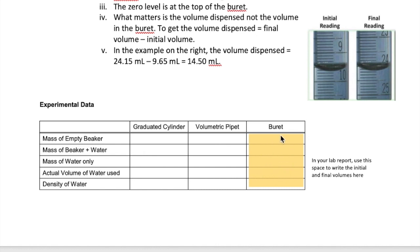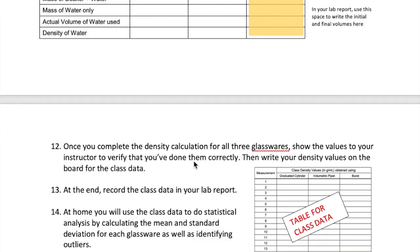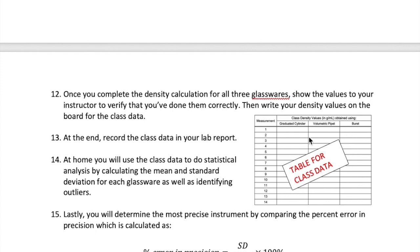Empty the burette contents into the small beaker, measure the mass of the water, and divide mass by volume to get your density. Once you complete the measurements and calculations for all three data columns, show those results to your instructor to check that your calculations and significant figures are correct. After the instructor confirms your results, write those three density values on the board in a class table.